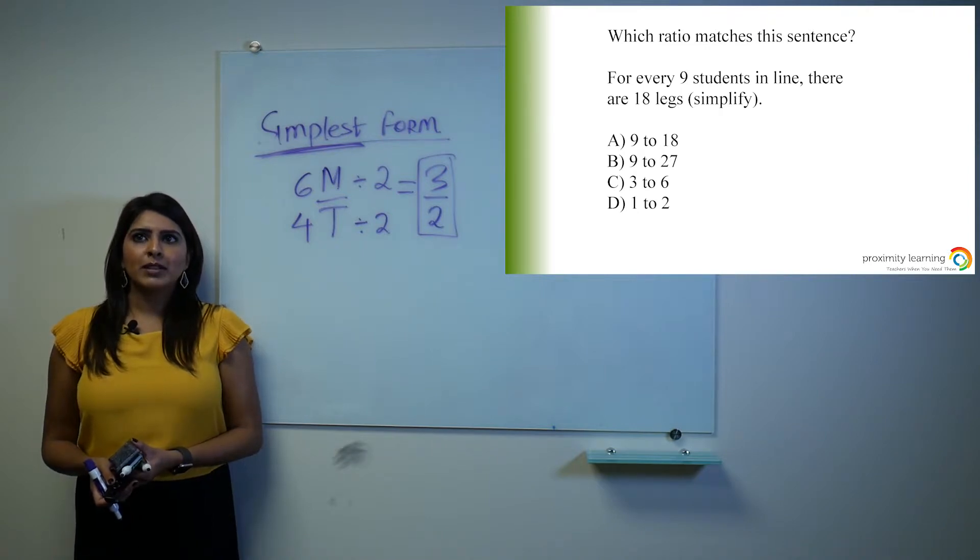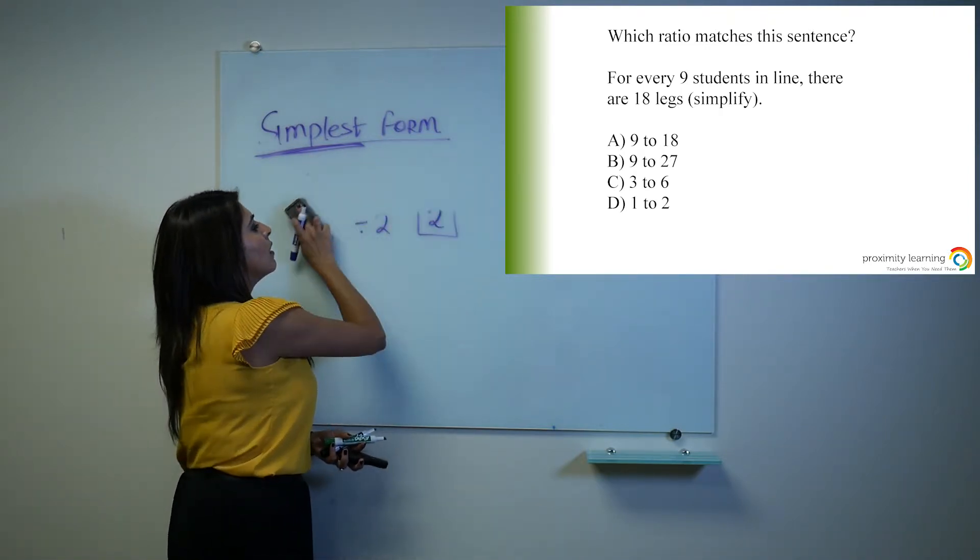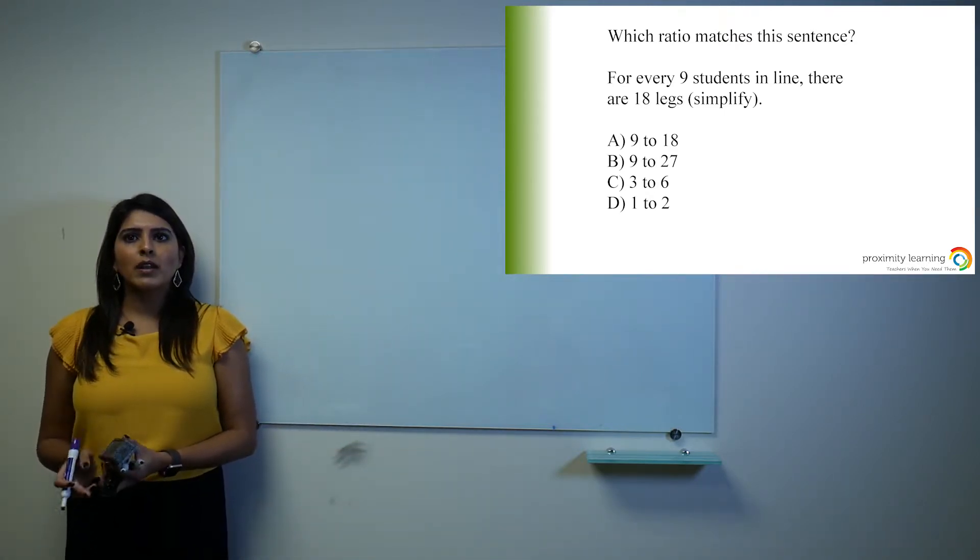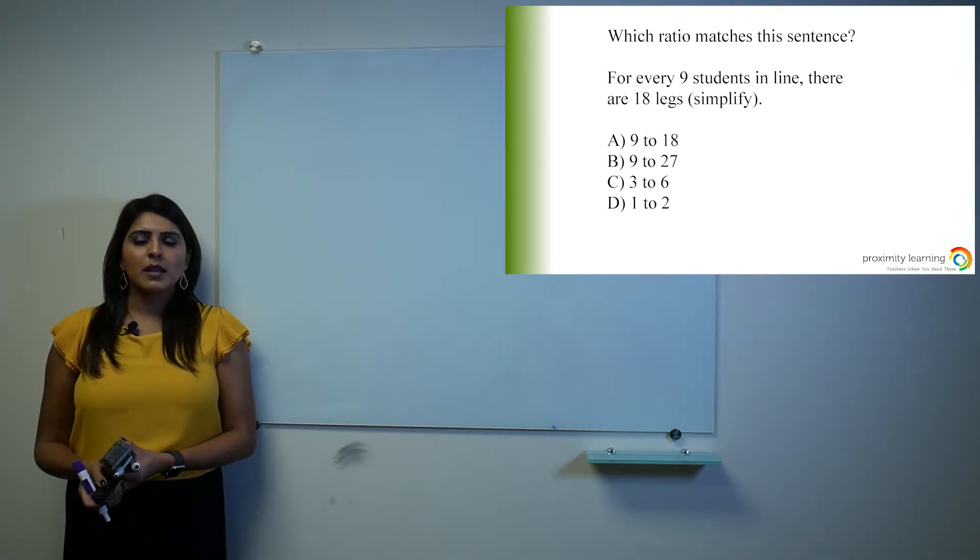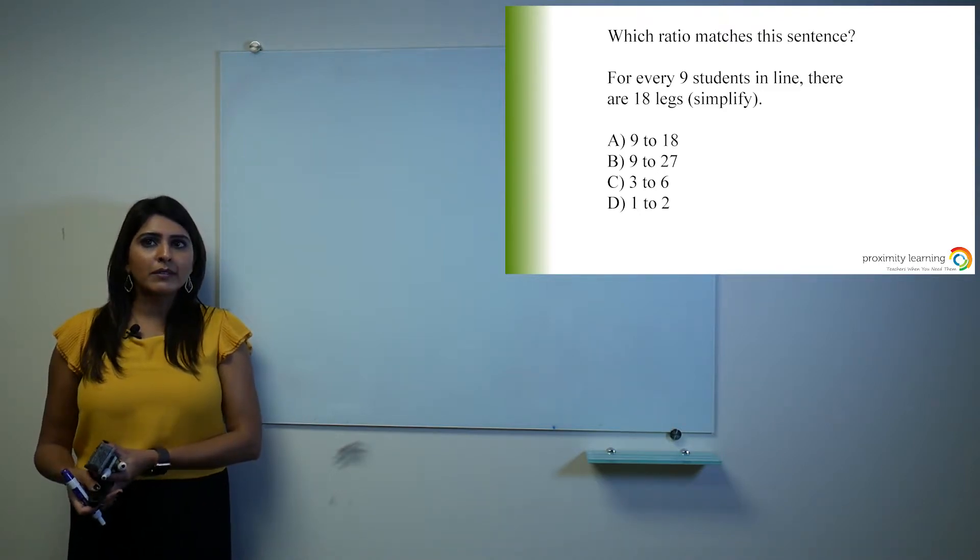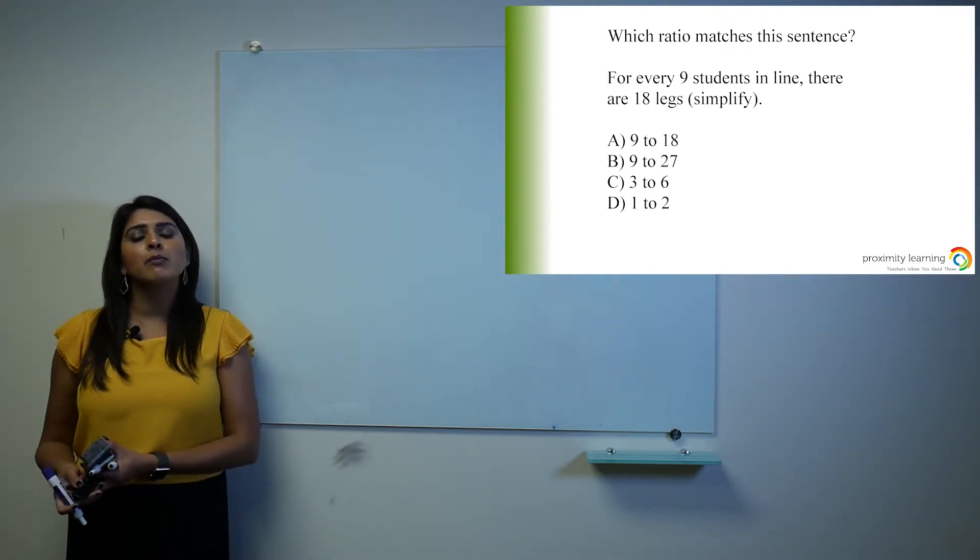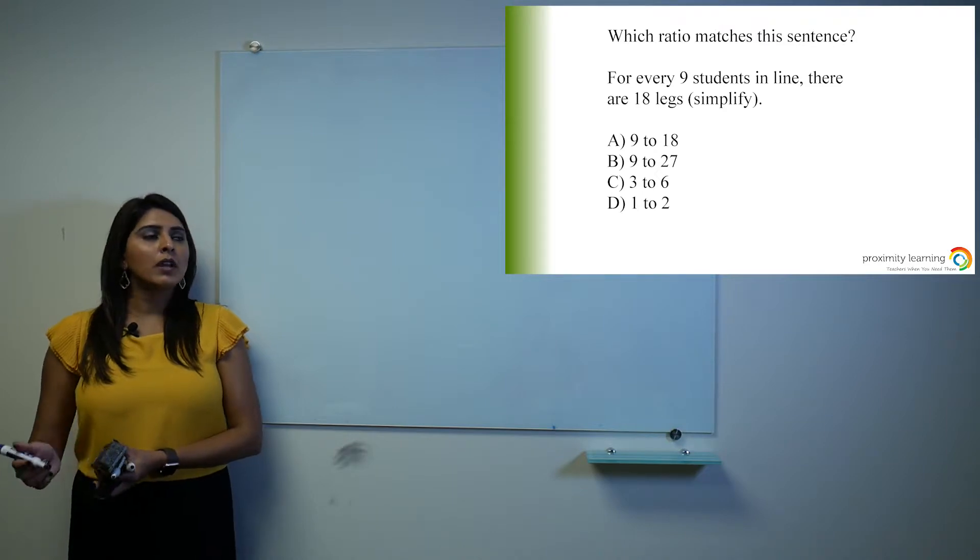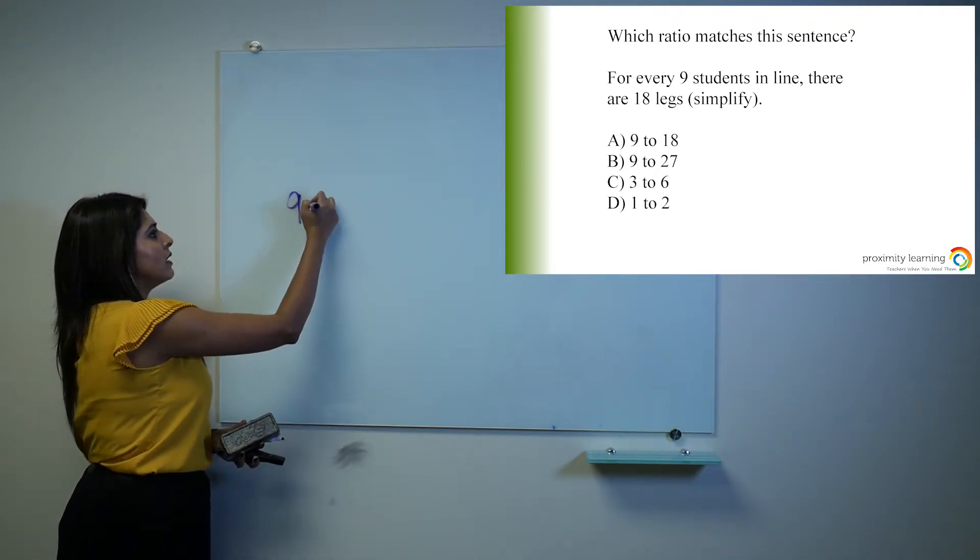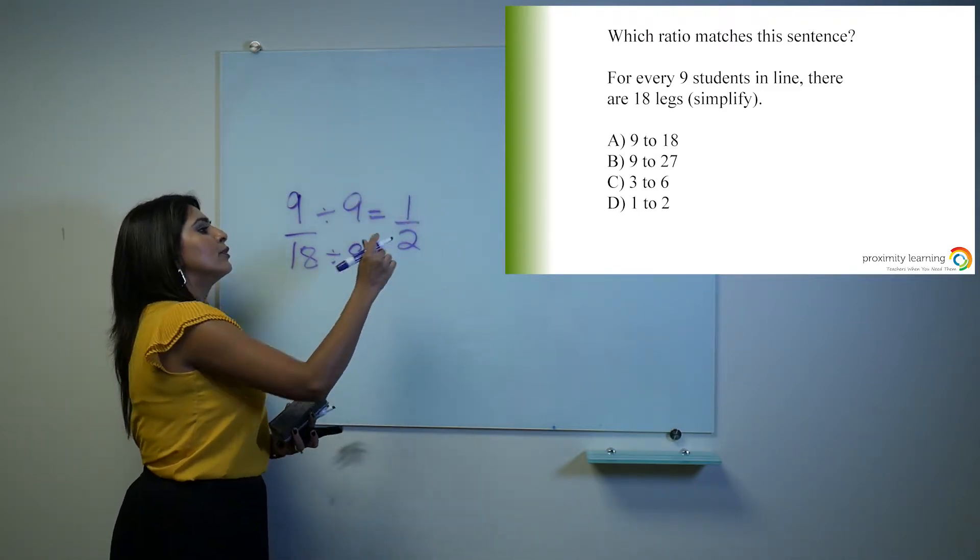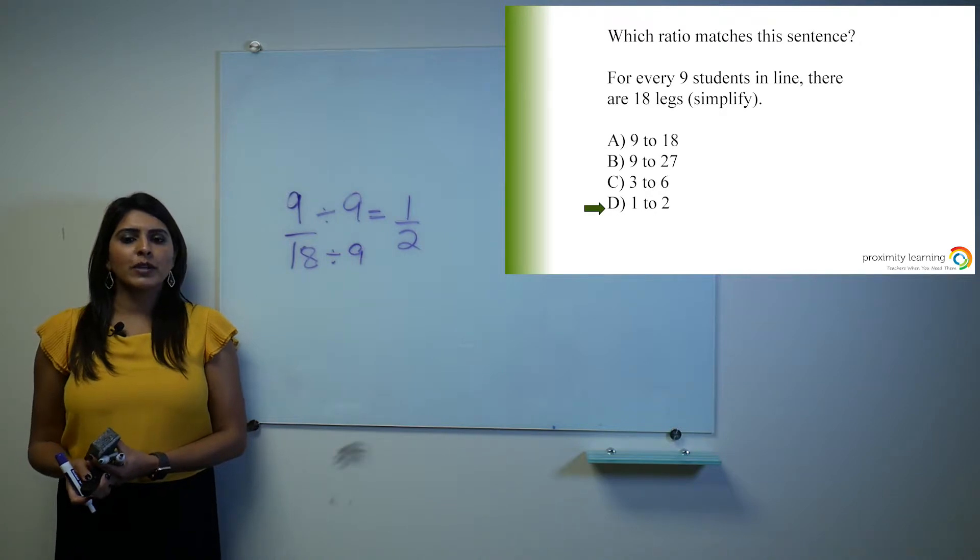Which ratio matches the sentence? For every 9 students in line, there are 18 legs. Right now I am giving you some hints by writing 'simplify' in the parentheses, but on your test or on a quiz or an assignment that you may come across, that information may not be given to you. So if I say 9 to 18 and I simplify it, it would be 1 to 2, which will give answer choice D, and that is the correct answer.